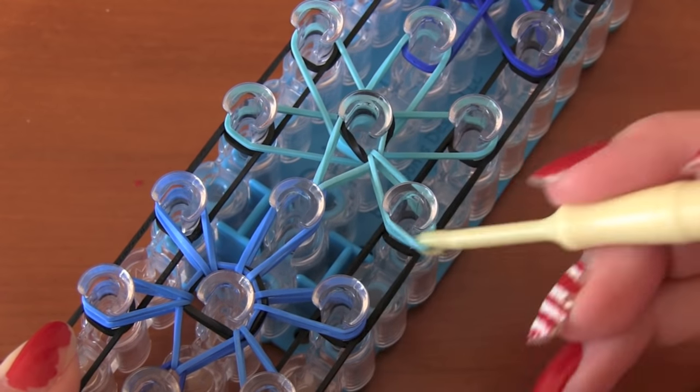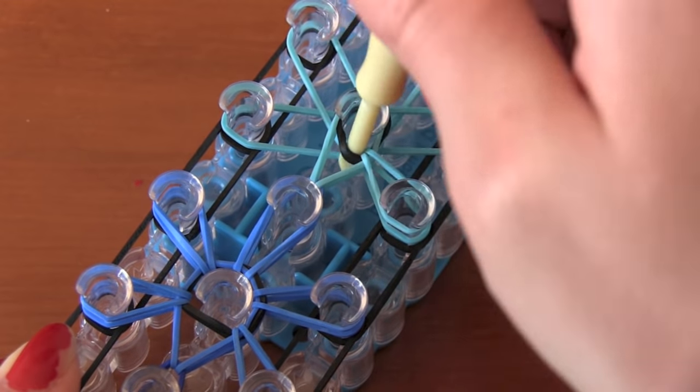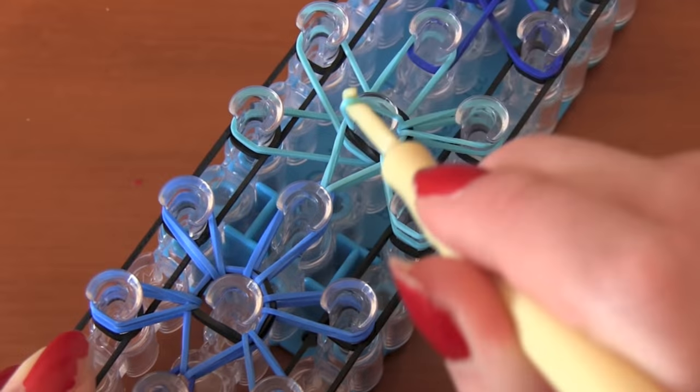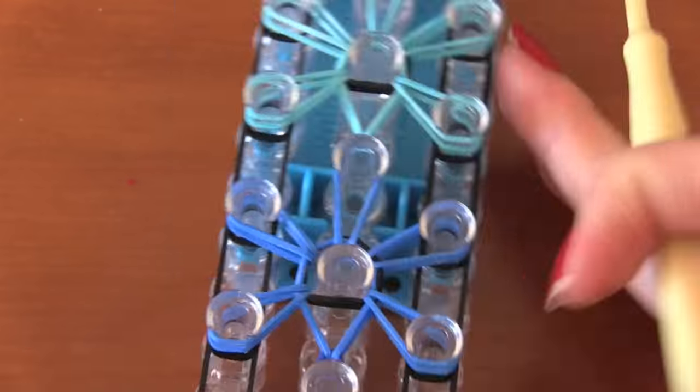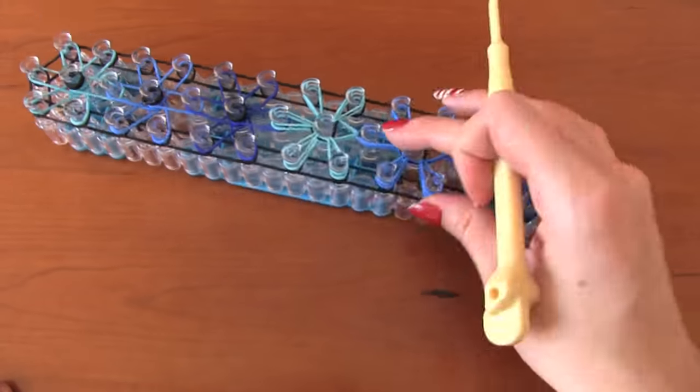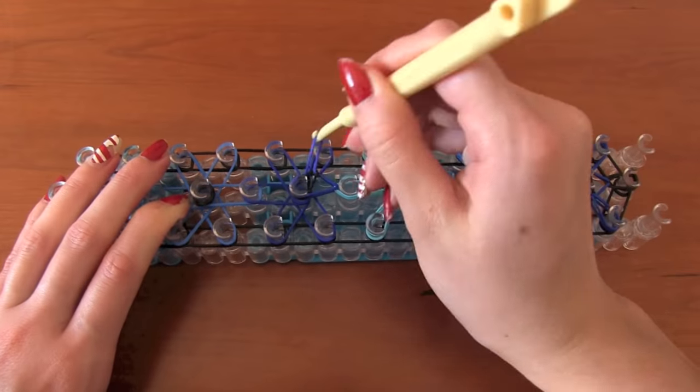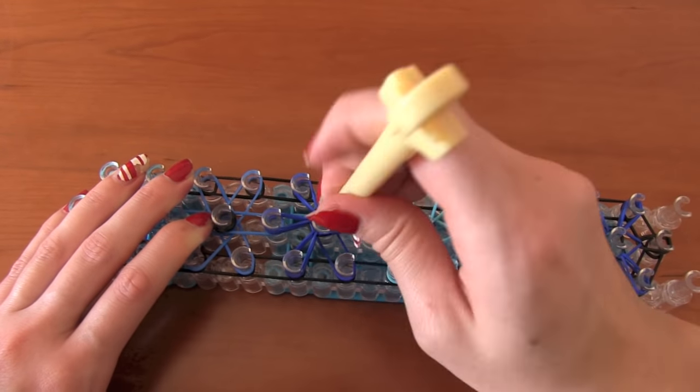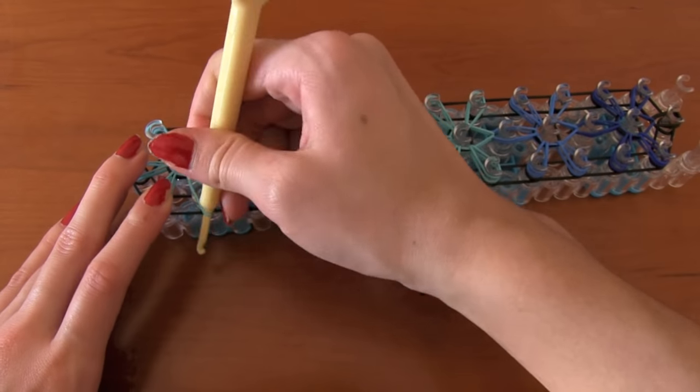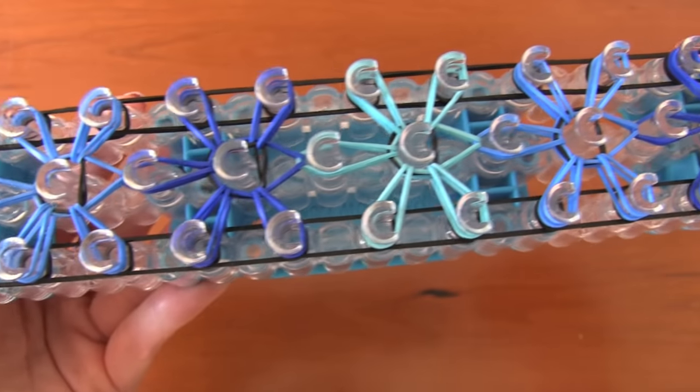So you're going to repeat this step for the entire rest of the bracelet. Just form the stars the same exact way you formed the first star and the second star. Once I have the final star complete, I'm going to go back to the end of the loom where the black capping band is. And we're going to start working on the border.